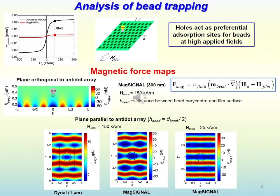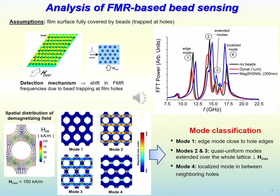The force amplitude decreases when reducing the external magnetic field. The analysis of the mechanism of sensing puts in evidence that the presence of magnetic particles trapped at the antidot array holes leads to a perturbation of the ferromagnetic resonance spectra of the antidot array, with a shift in the frequencies of the main ferromagnetic resonance modes which depends on the size and magnetic moment of the bits. The main ferromagnetic resonance modes are the edge mode in correspondence to the hole edges, the quasi-uniform modes extended over the whole lattice with stripes perpendicular to the bias field direction, and the localized mode which appears in between neighboring holes.